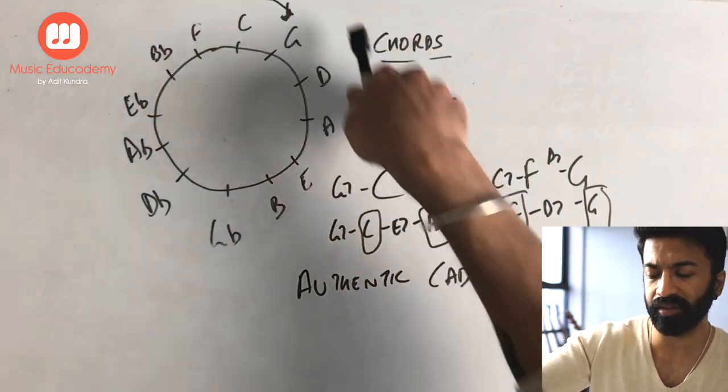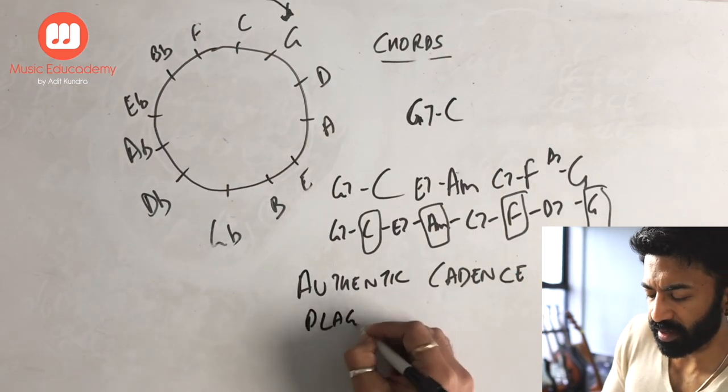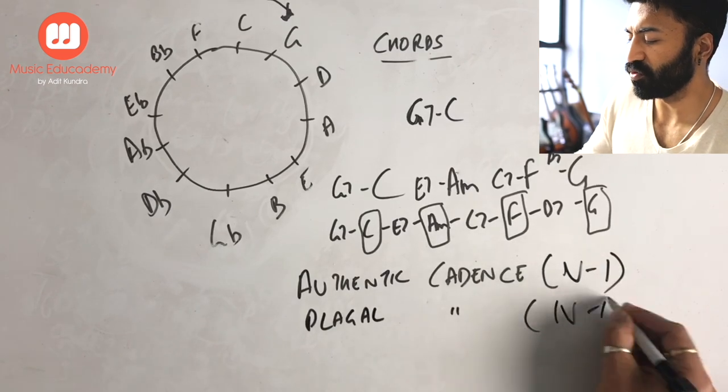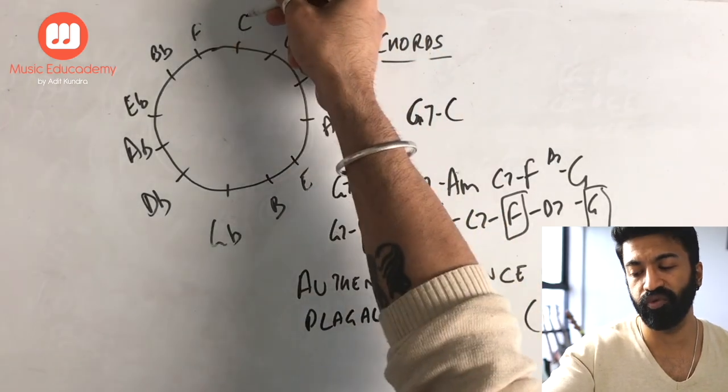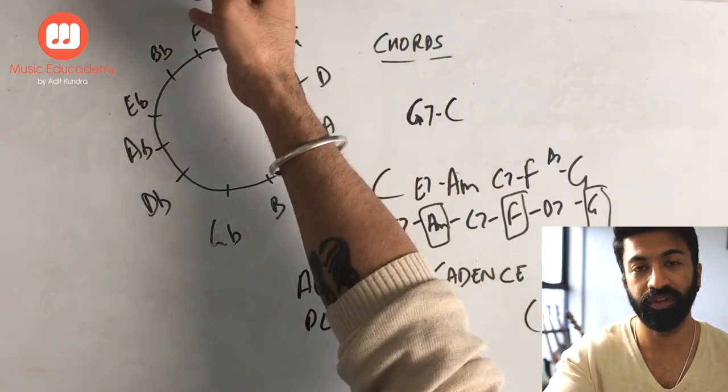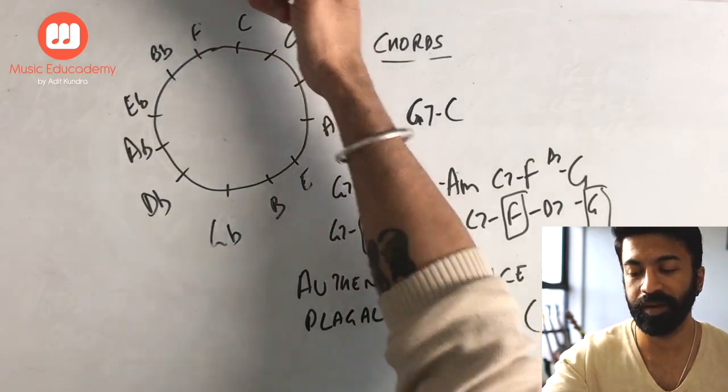The 4 to 1 movement is called a plagal cadence. This is our 5 to 1, this is our 4 to 1. This is our F to C, C to G. This is basically a 4 to 1 movement. This is our fourth. C-D-E-F to C. This is a 4 to 1 movement. This is our 5 to 1 movement.